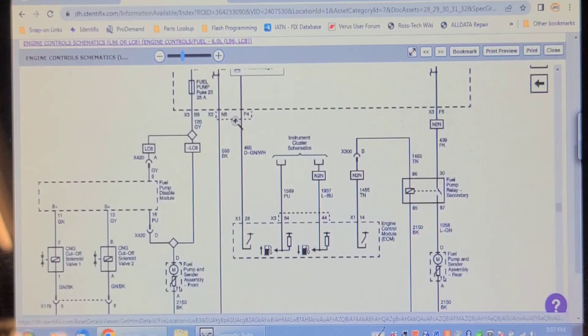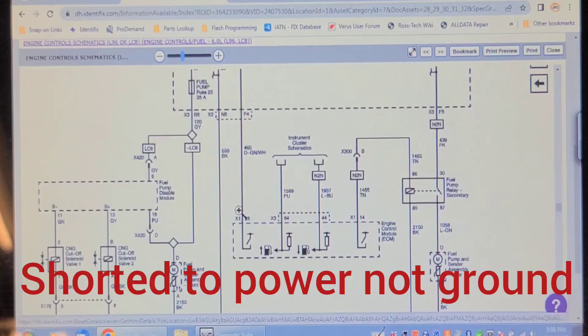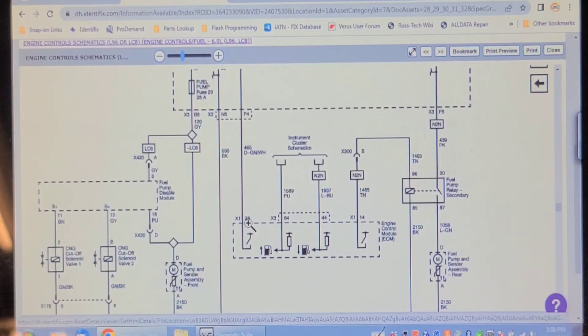I suppose I could try to see if connector X2 under the fuse panel pin 4 P4 here is populated. If it is then this circuit could be shorted to ground, it might still have the wire in the harness. Or I could go right to the ECM and see if connector X1 has a pin in 28.